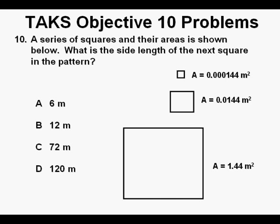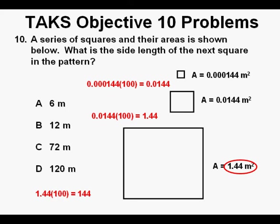Problem 10. A series of squares and their areas is shown below. What is the side length of the next square in the pattern? The first thing to look at is the pattern from one square to the next. The first one has an area of 0.000144 square meters. The second square is 0.0144 square meters in area. And the third square is 1.44 square meters in area. The progression is that we get from the first to the second square by multiplying the area by 100. And we get from the second to the third square by again multiplying the area by 100. So, following the same pattern, we can get to the fourth or next area by taking the area of the third square, 1.44 square meters, and multiplying it by 100 for a total of 144 square meters.